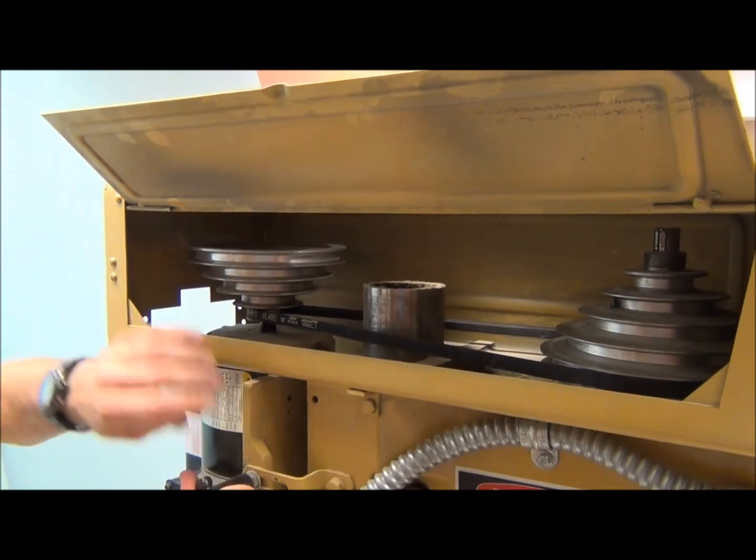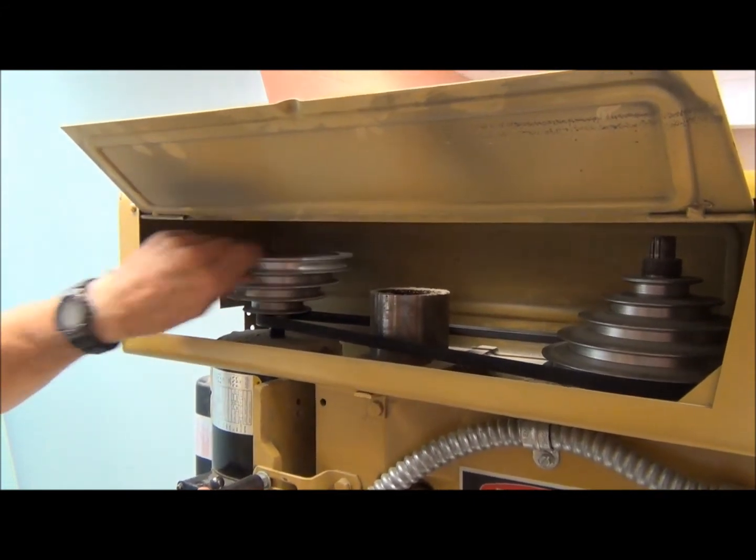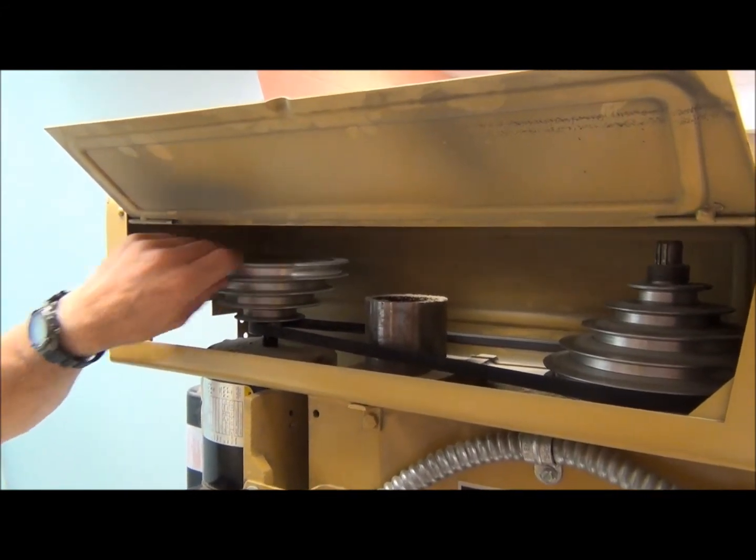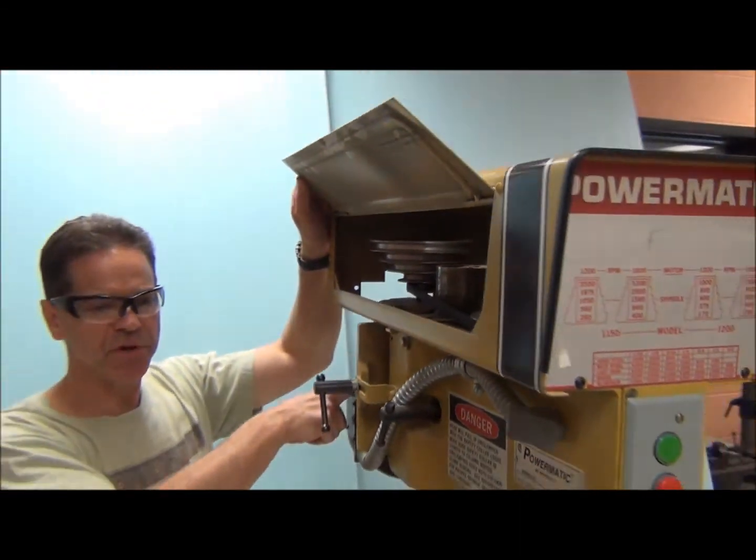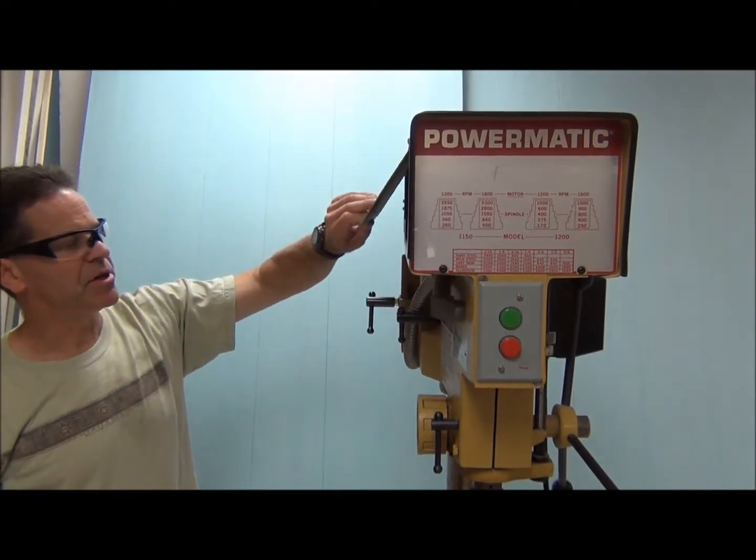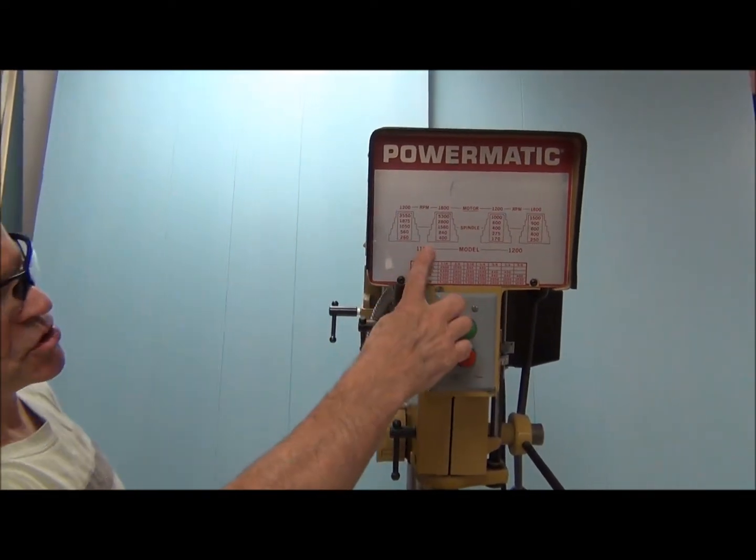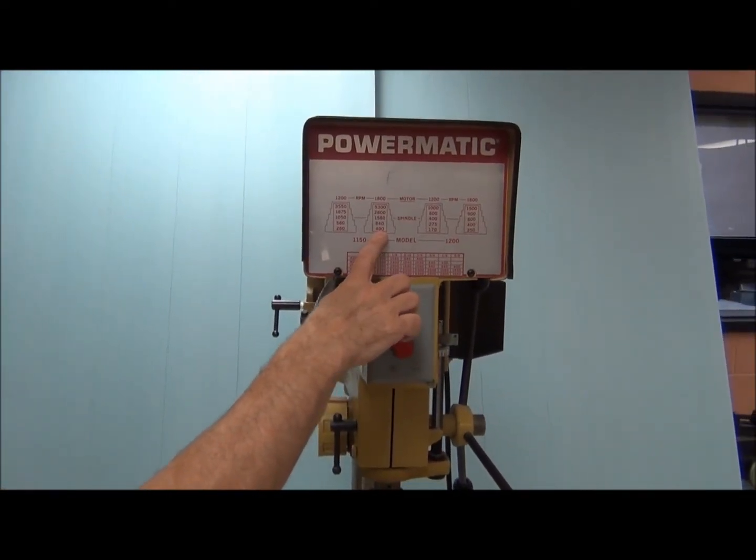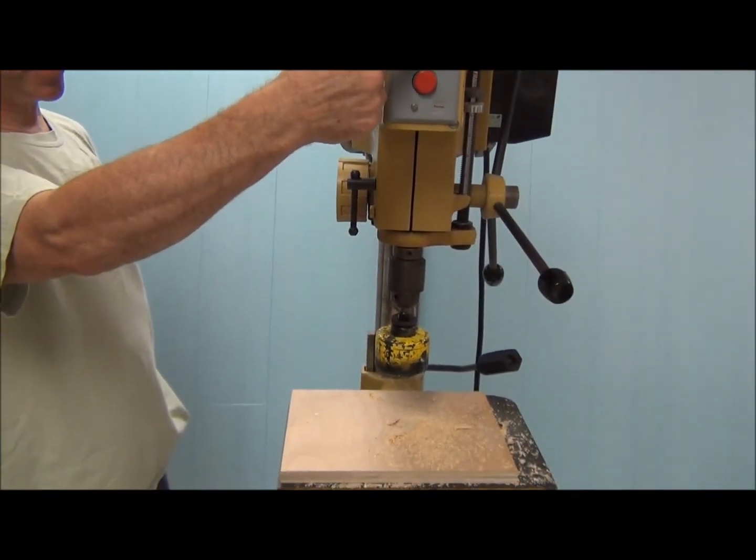And we should see a dramatic difference in how fast this is spinning, even though the motor is going the same speed. The motor always runs at 1700 RPM or 1725. So here, remember what it said on the chart. The spindle should now be spinning about 400 revolutions per minute. Let's take a look at that.